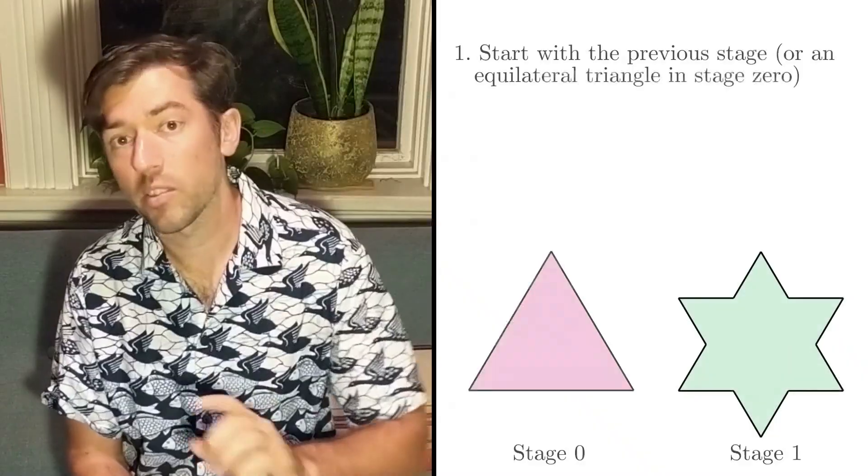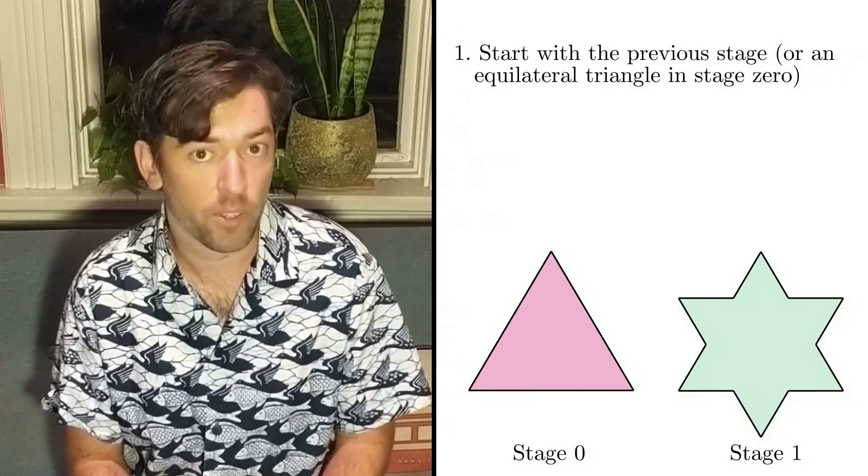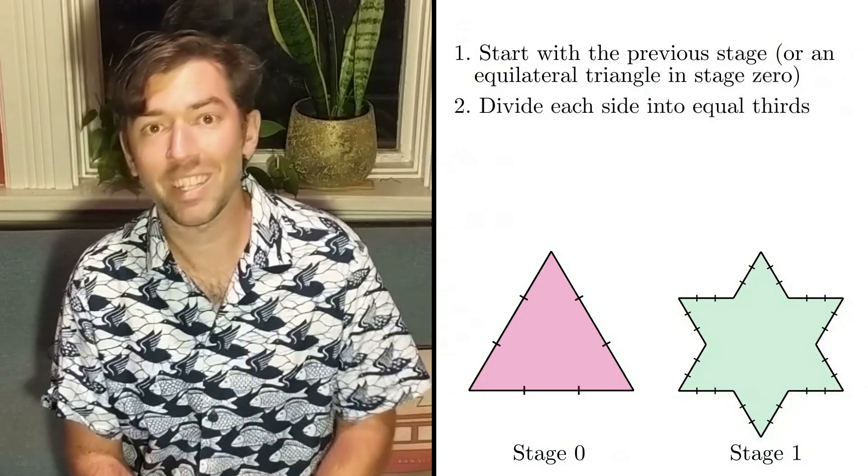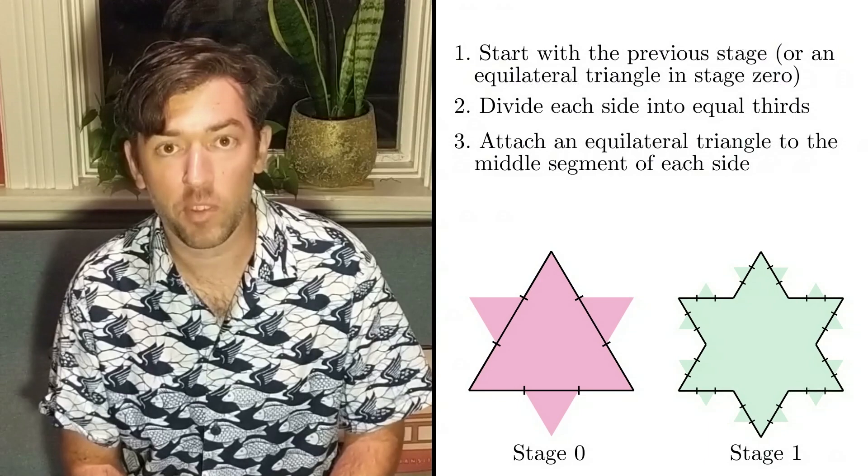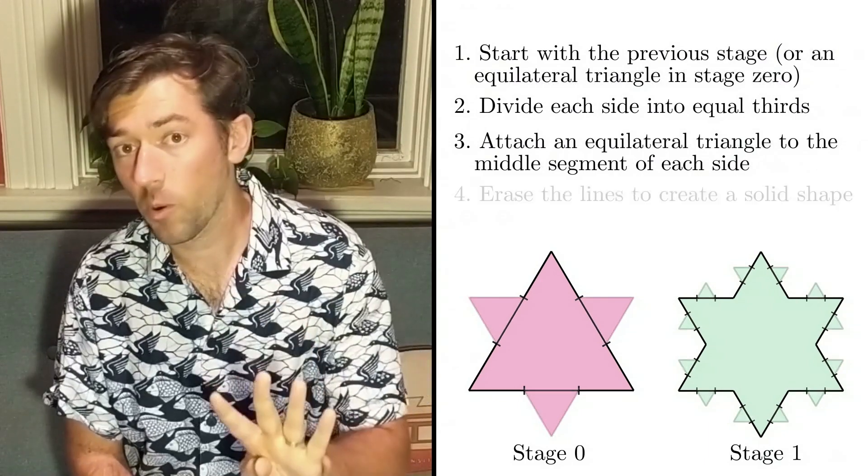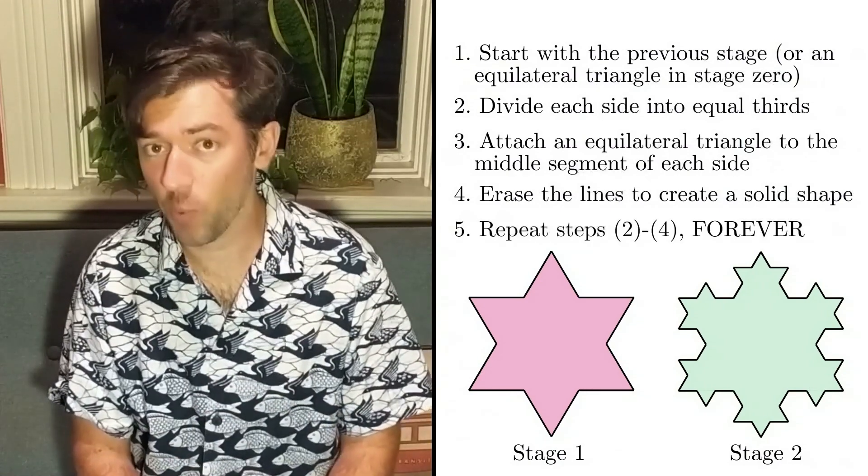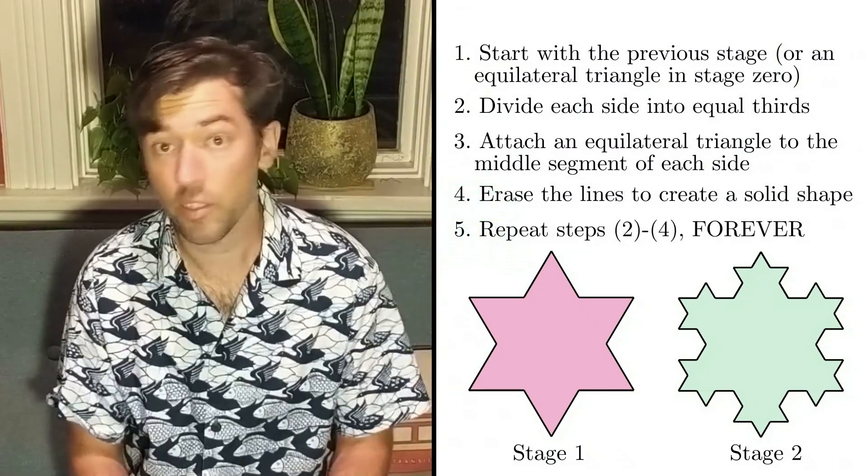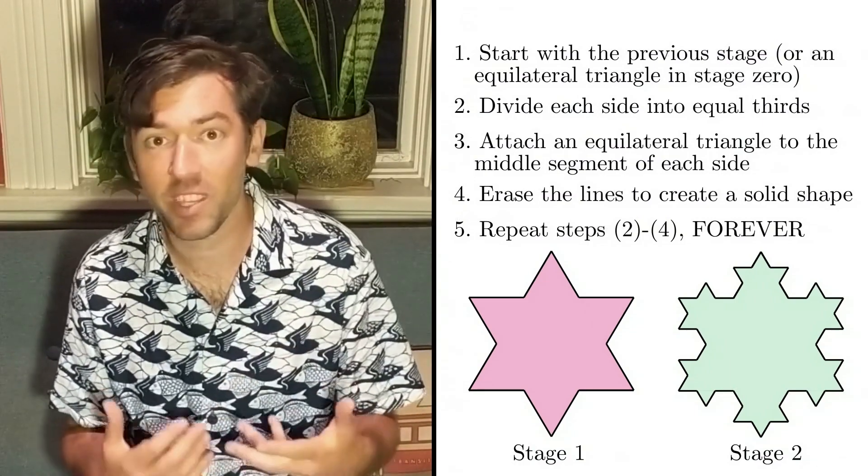Here's what I would say, and watch how the exact same rules can take us from stage zero to stage one and from stage one to stage two. Step one, start with the shape from the previous stage or an equilateral triangle if you're at the first stage. Step two, split each side into equal thirds. Step three, attach an equilateral triangle to the middle segment of each side. Step four, erase the lines to create one solid shape. And step five, repeat the first four steps. It's true, you can actually keep repeating these steps forever and the design will just get more and more detailed.